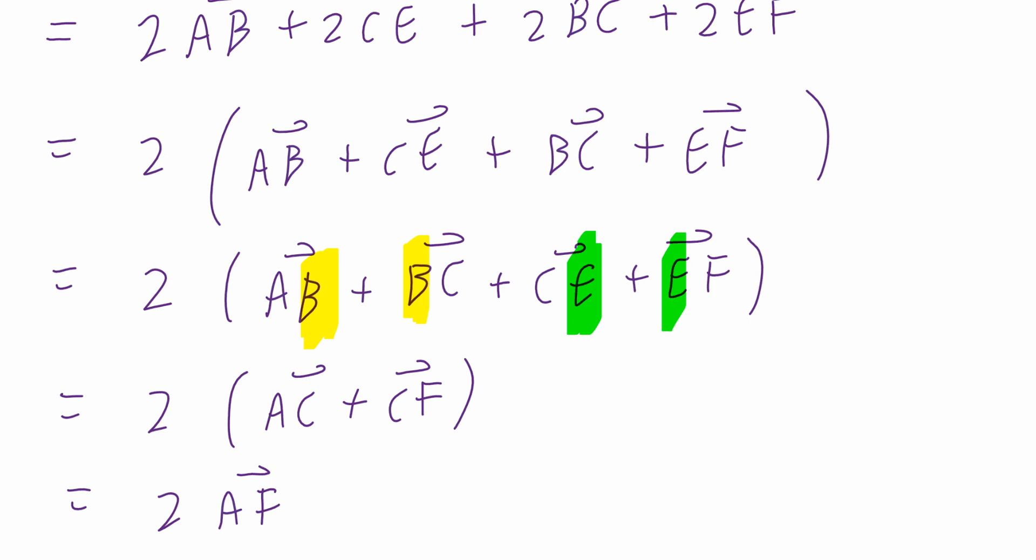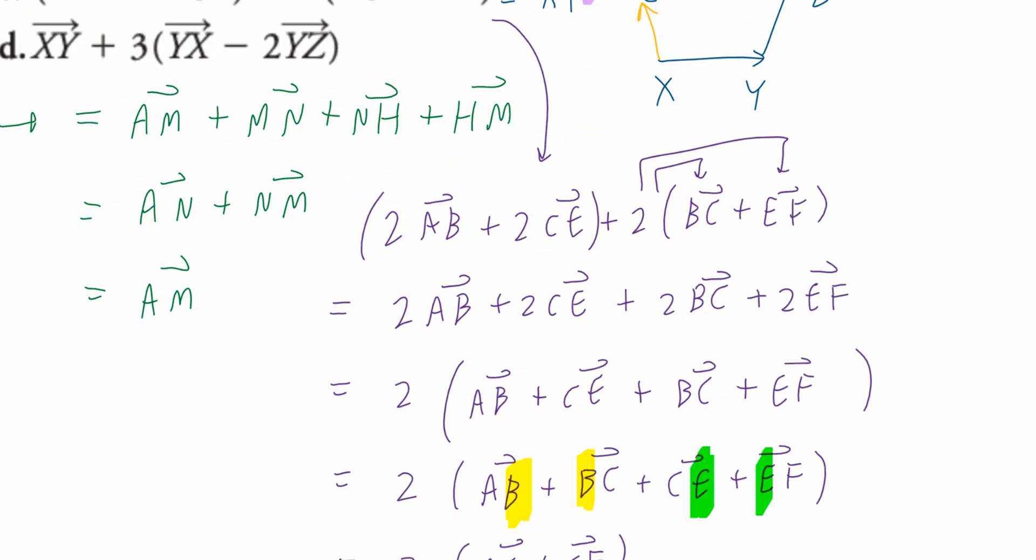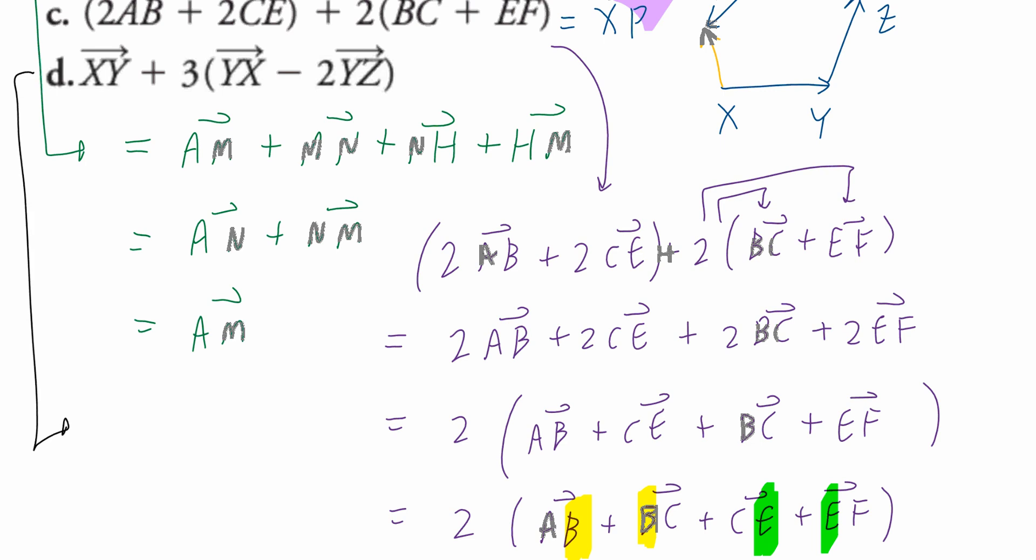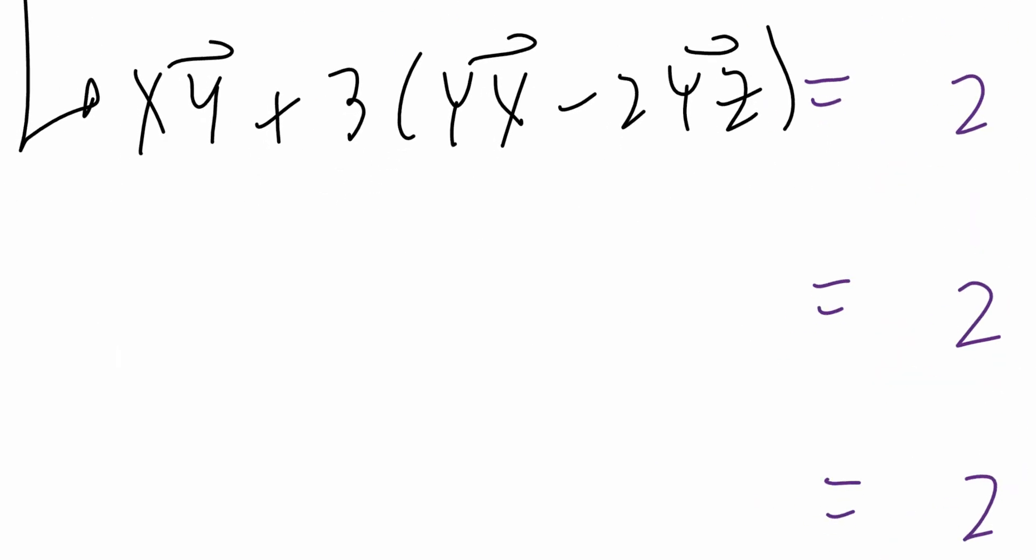One more time. Part E, I mean part D, not part E. Here we go. The first step is I'm going to copy the entire question as is. Then, I'm assuming for you. This equals to vector XY plus 3 times vector YX minus 6 times vector YZ. Again, here are the arrows.